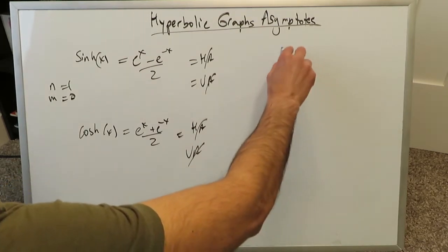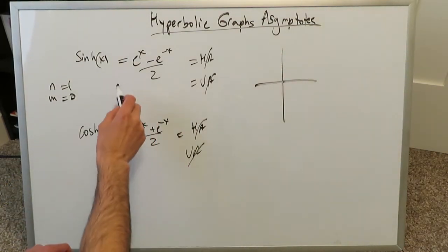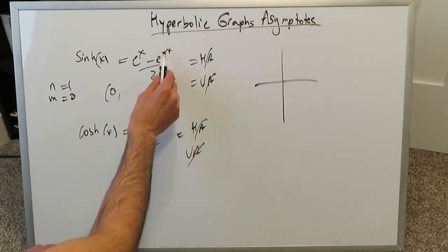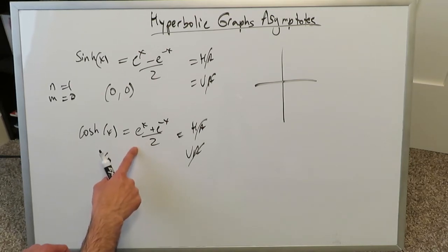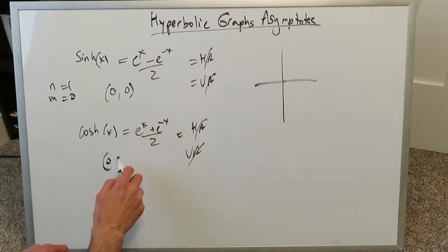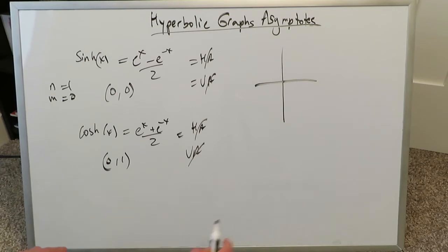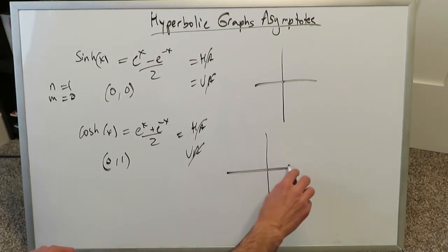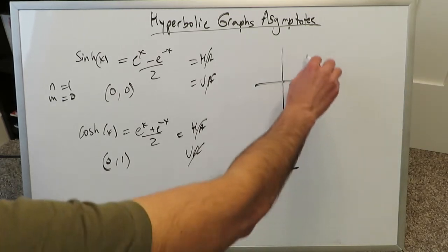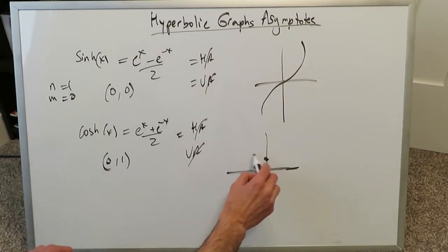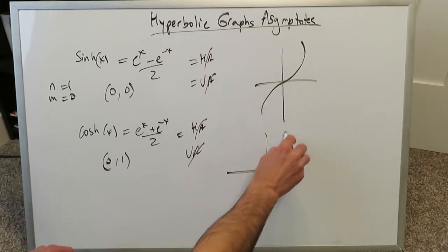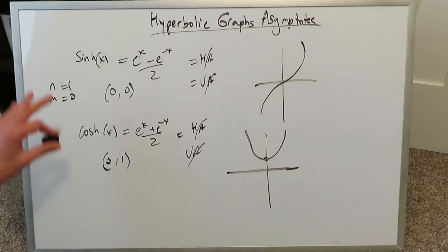In terms of graphing: if you put 0 in place of x in sinh(x), you zero out the numerator and get an origin point. For cosh(x), substituting x=0 gives 2 over 2, which is 1, so you get a y-intercept of (0,1). The hyperbolic sine graph passes through the origin, and the hyperbolic cosine has a y-intercept at (0,1). These two graphs are easy — no asymptotes of any kind.